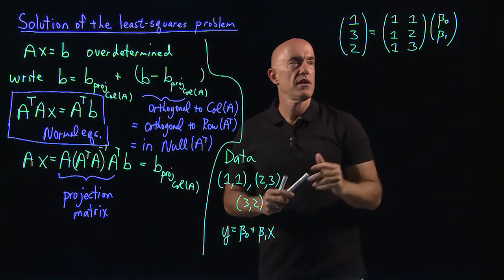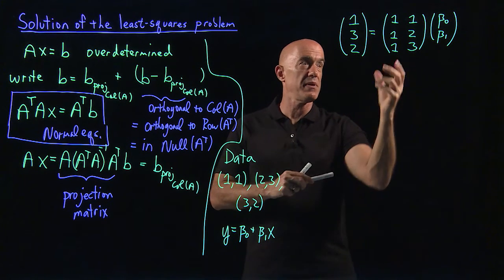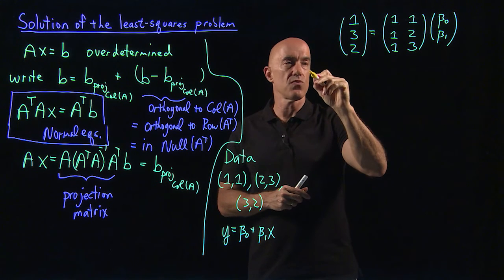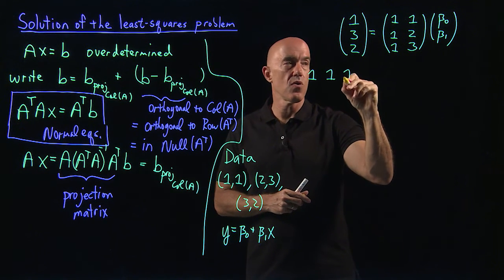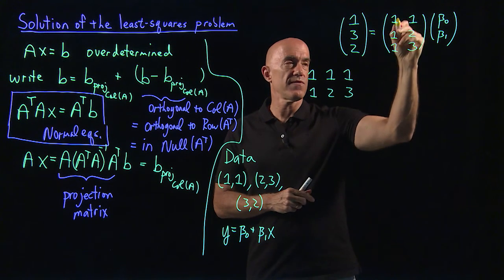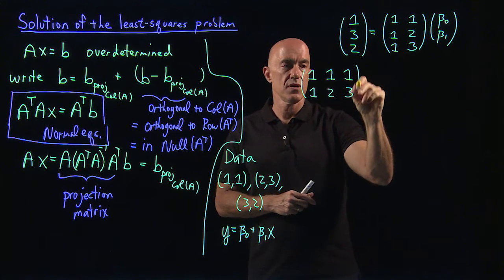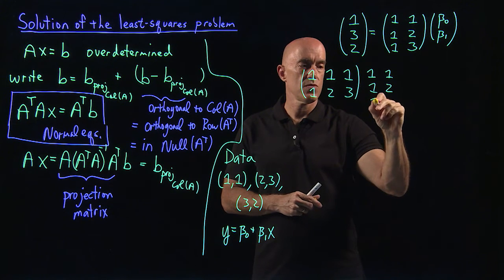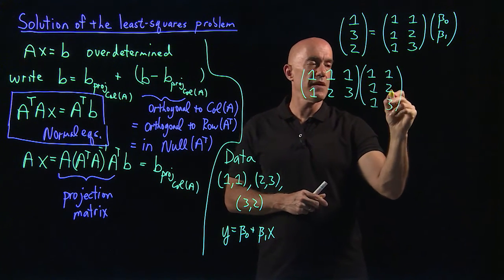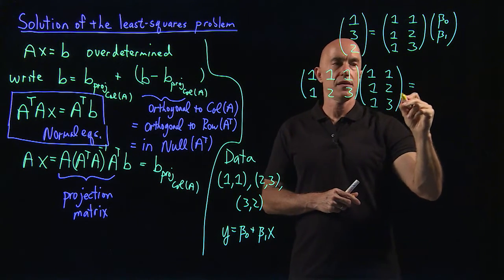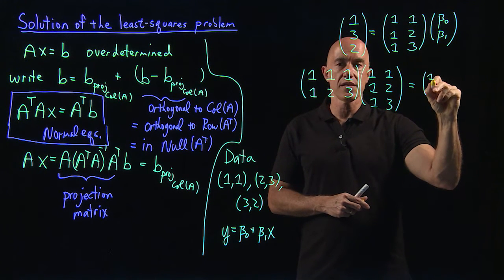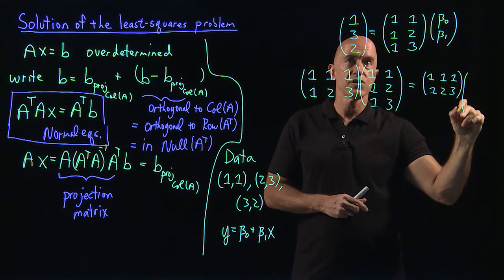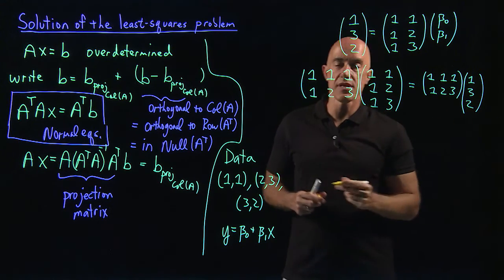To form the normal equations we multiply both sides by A transpose. A transpose is the 2 by 3 matrix with first row 1, 1, 1 and second row 1, 2, 3. Computing A transpose A, we get the 2 by 2 matrix: top row 3, 6 and bottom row 6, 14. Since 1+1+1=3, 1+2+3=6, and 1+4+9=14. The right-hand side A transpose times y gives: 1+3+2=6 in the first entry, and 1+6+6=13 in the second entry.